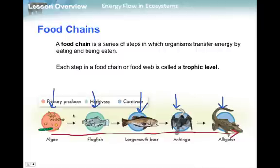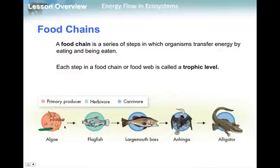In this particular food chain, there are four interactions or four feedings happening: the flagfish eating the algae, the largemouth bass eating the flagfish, the anhinga eating the largemouth bass, and the alligator eating the anhinga. Our primary producers make food first — they make their own food using things from the environment and either sunlight or chemical energy; they don't consume anything. The primary producers are algae. They get eaten by the first consumer, which are herbivores — organisms that eat only producers. Then we have three carnivores in this chain.